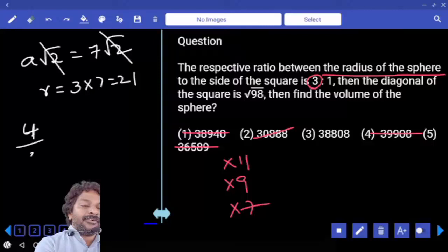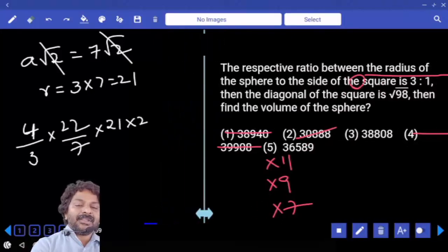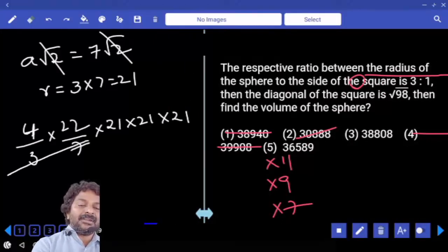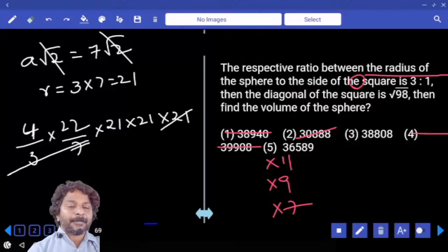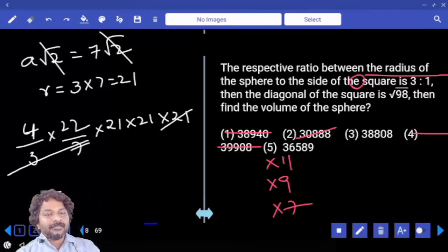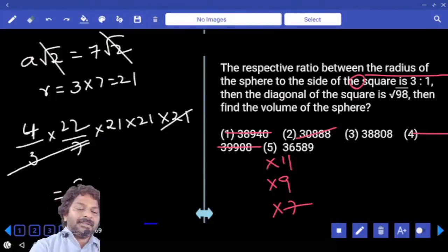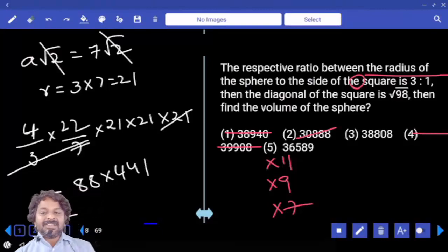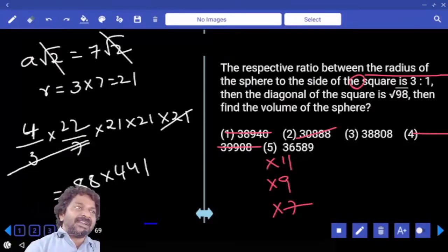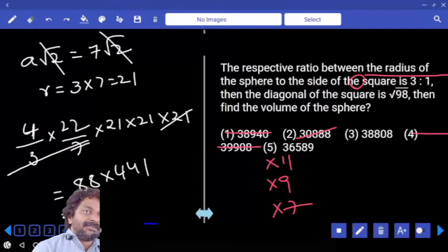Now, finally, 4 third pi r cube. 21 into 21 into 21. 21, 21 can be cancelled here? Yes. And then, we have to solve this question. There are 3 options which are ending with 8. 88 into 441. Last digit, 8. There are 3 options which are ending with 8. Last digit, so we have to calculate. There is no other way.